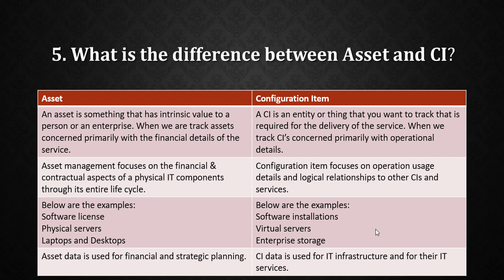Examples: software licenses, physical servers, laptops, and desktops come under assets, while software installations, virtual servers, and enterprise storage come under Configuration Items. In summary: asset data is used for financial and strategic planning, while CI data is used for IT infrastructure and IT services.